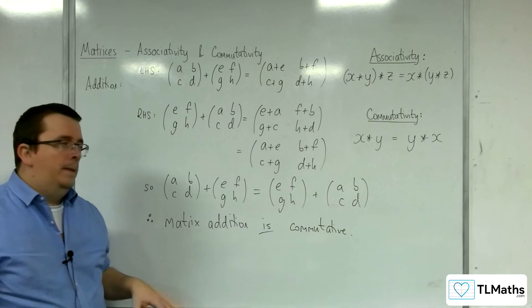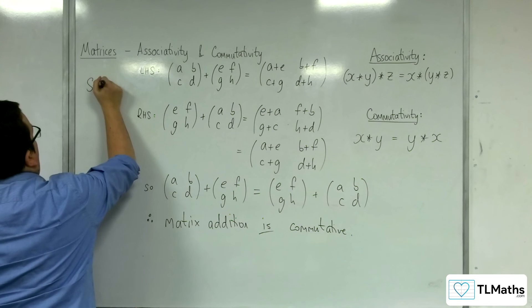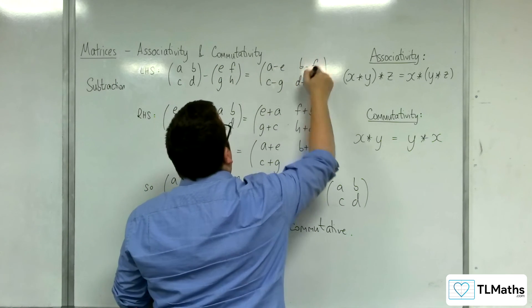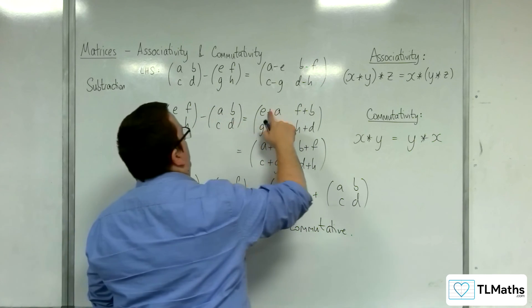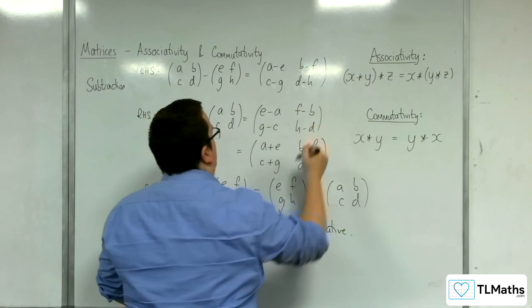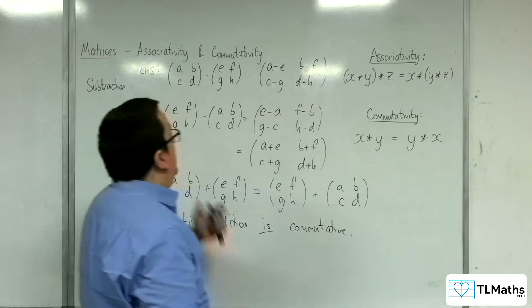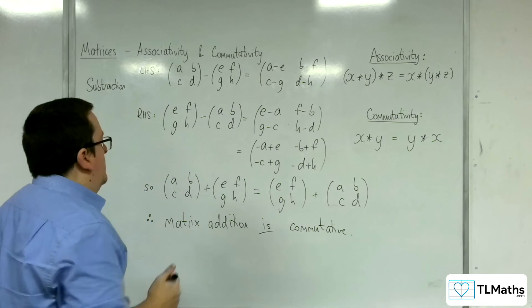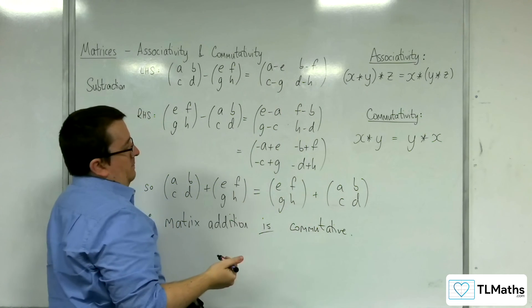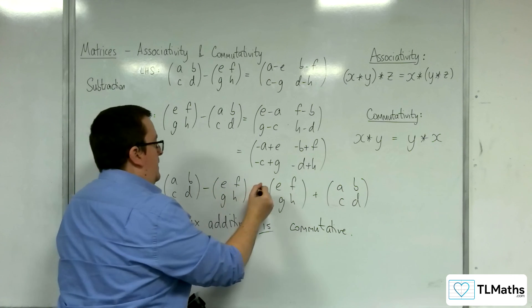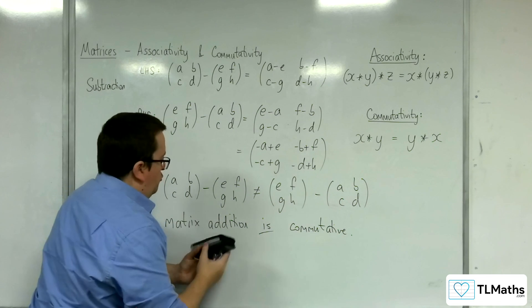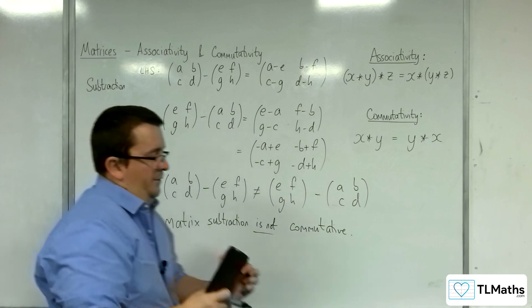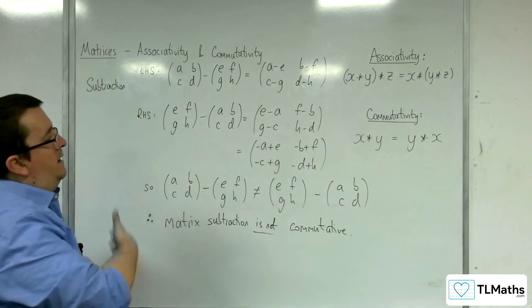And that is the proof to show that. Now, if we were to change this to subtraction, I could write that as -a+e, -b+f, -c+g, -d+h. And so we know that that is not the same as that. So matrix subtraction is not commutative. And so we can show that generally using this process.